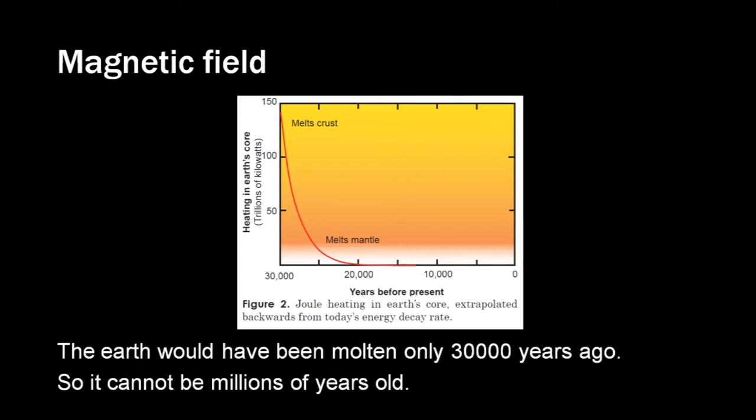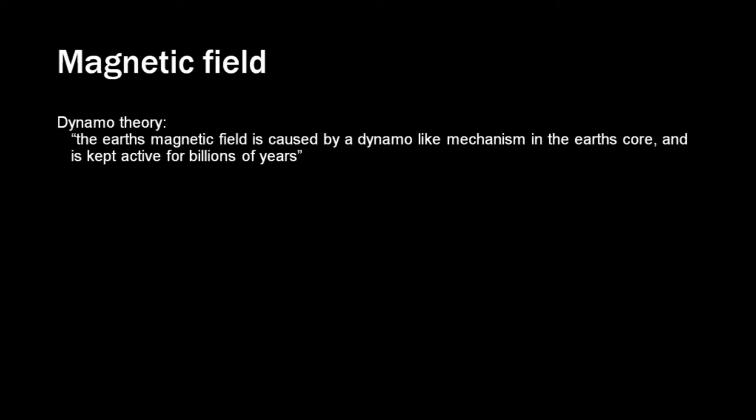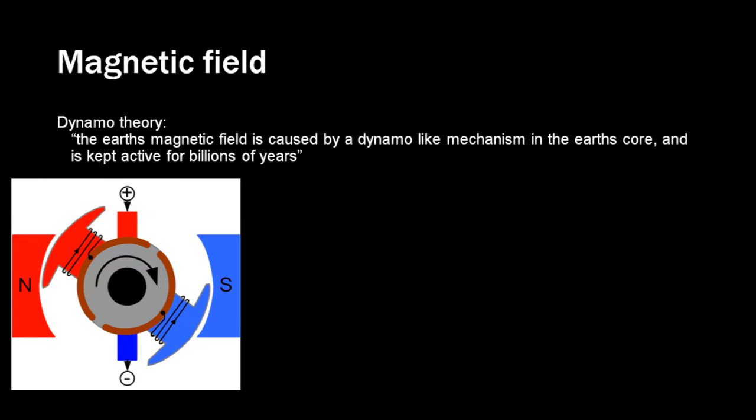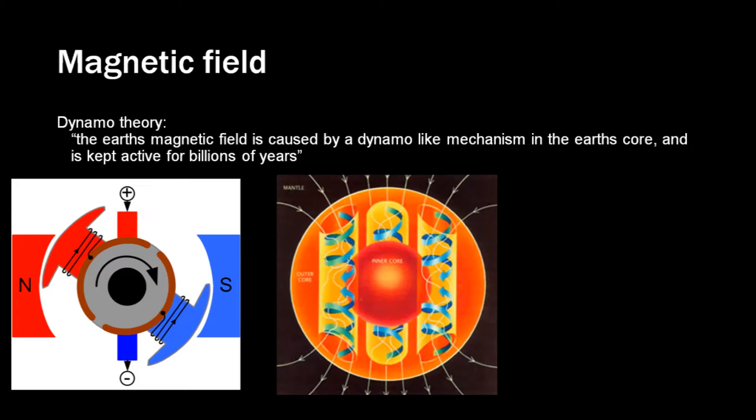Now, a lot of people allegedly know that the Earth is old, so they have come up with a theory to explain why the Earth has a magnetic field for billions of years. And that theory is the dynamo theory. They say the Earth works like a dynamo. This theory was invented over a century ago.